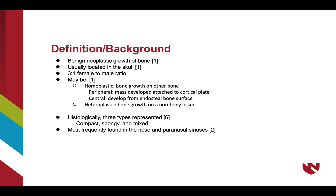The definition of an osteoma is a benign neoplastic growth of bone tissue. These neoplasms are normally located in the skull with an increased incidence in females at a 3 to 1 ratio to males. These growths can be classified as homoplastic or heteroplastic. Homoplastic growths are bone growths on other existing bone and can be further subclassified into peripheral, which is a mass developed attached to the cortical plate, or central, which develops from the endosteal surface of the bone.